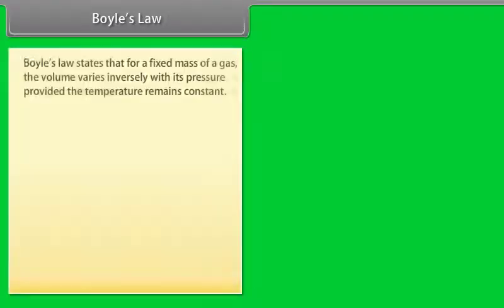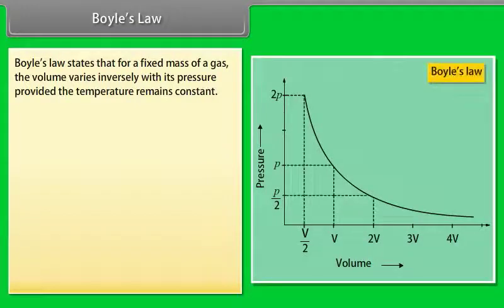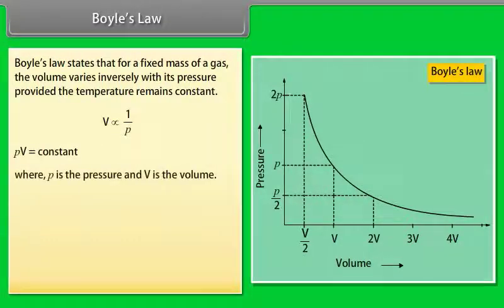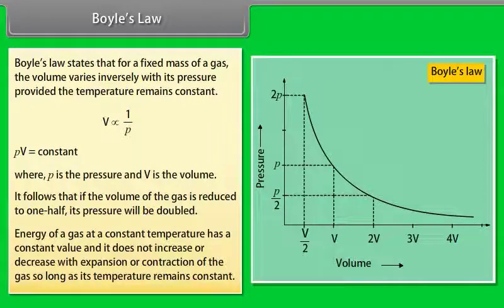Boyle's law states that for a fixed mass of a gas, the volume varies inversely with its pressure provided the temperature remains constant. PV equals constant, where P is the pressure and V is the volume. It follows that if volume of the gas is reduced to one half, its pressure will be doubled. Energy of a gas at constant temperature has a constant value and it does not increase or decrease with expansion or contraction of the gas so long as its temperature remains constant.